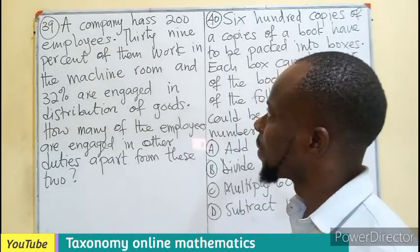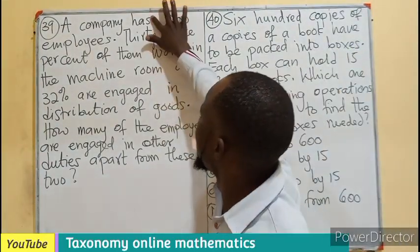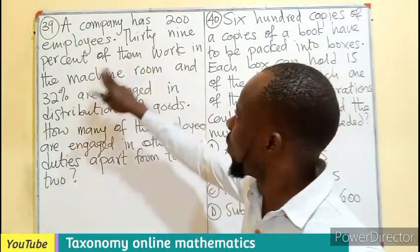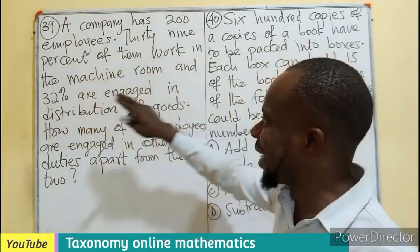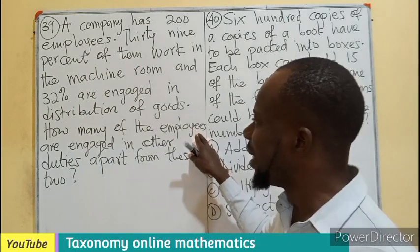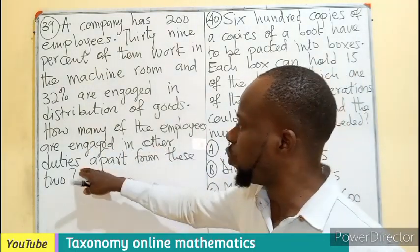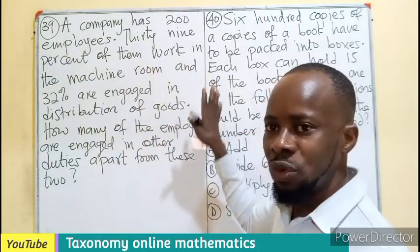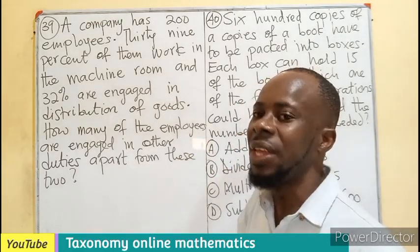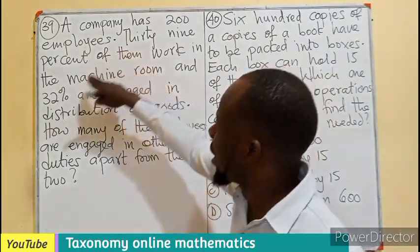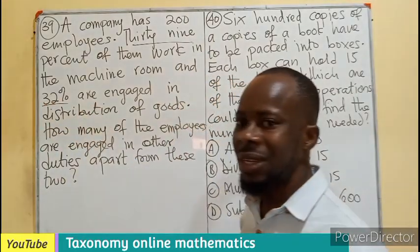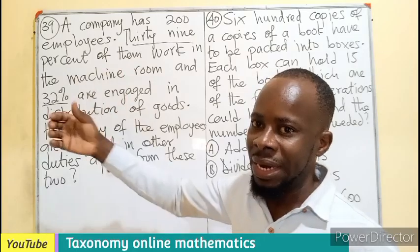Let's take question 39. A company has 200 employees. 39 percent of them work in the machine room and 32 percent are engaged in distribution of goods. How many of the employees are engaged in other duties apart from these two? We are looking for how many employees — not percentage. We already know the percentage of those in the machine room is 39 and those in distribution is 32, but we don't know their actual number.